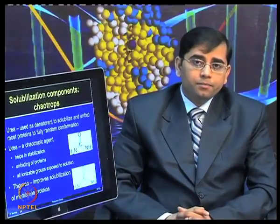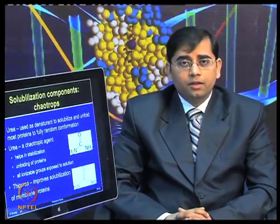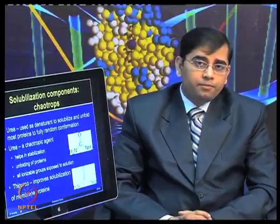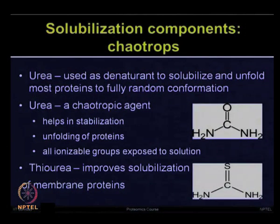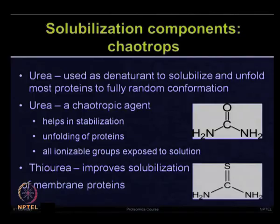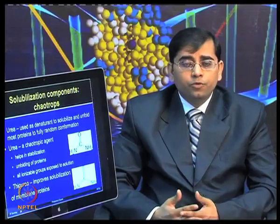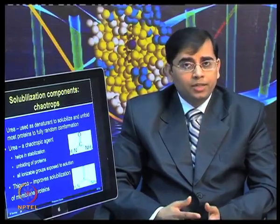Let us discuss the different components used in solubilization one by one. First, chaotropes — urea and thiourea. Urea is used as a denaturant which can solubilize and unfold most proteins to fully random conformations so that all ionizable groups are exposed to the solution. Thiourea improves solubilization of membrane proteins more specifically, and mostly both urea and thiourea are mixed together during the solubilization step.